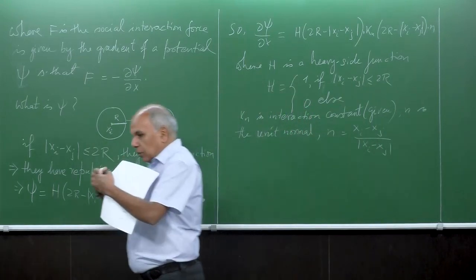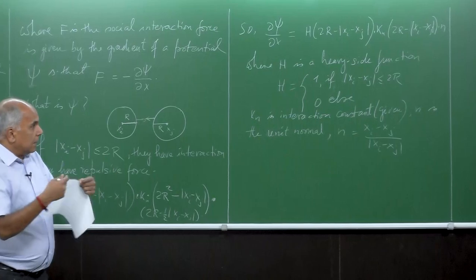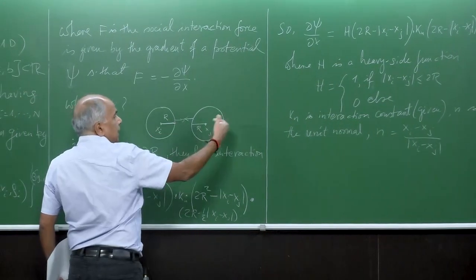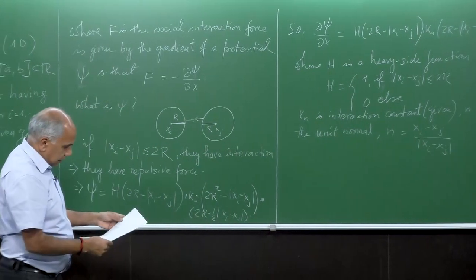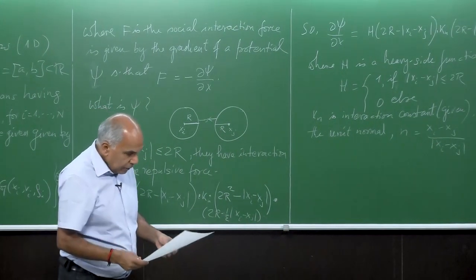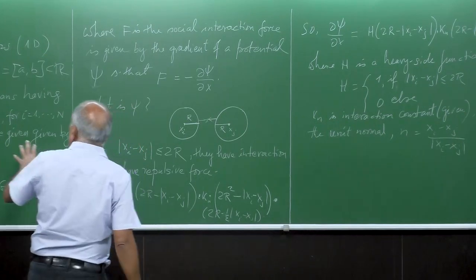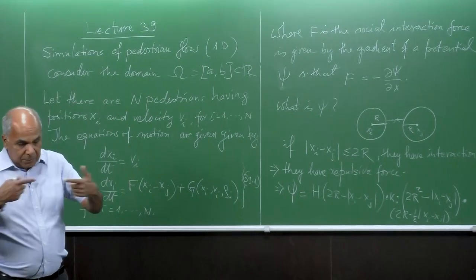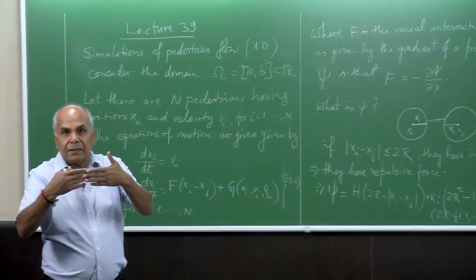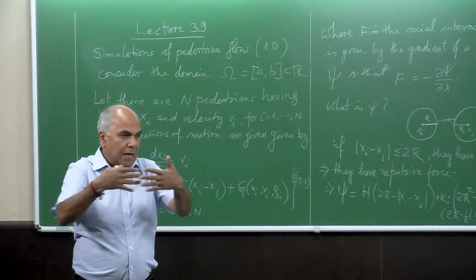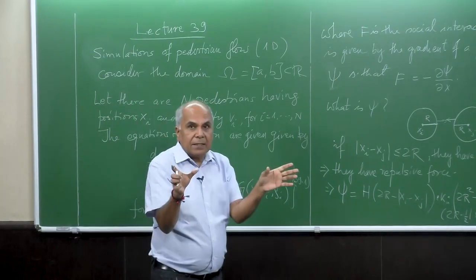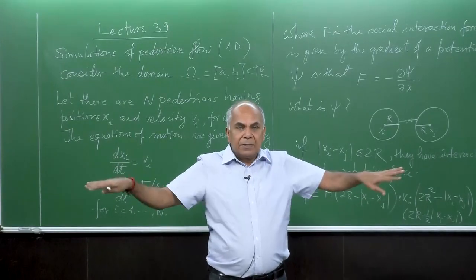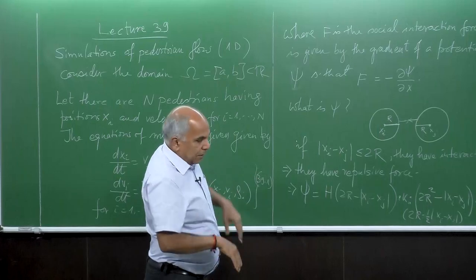If they are close together, n equals either plus or minus 1, so they go either left or right — that gives the interaction direction. This interaction force does not allow two pedestrians to collide: if they are within interaction radius r, there will be a repulsive force pushing them away, either left or right.